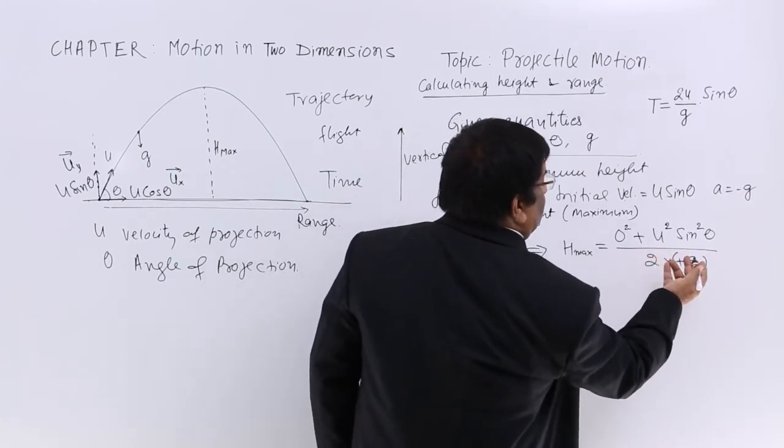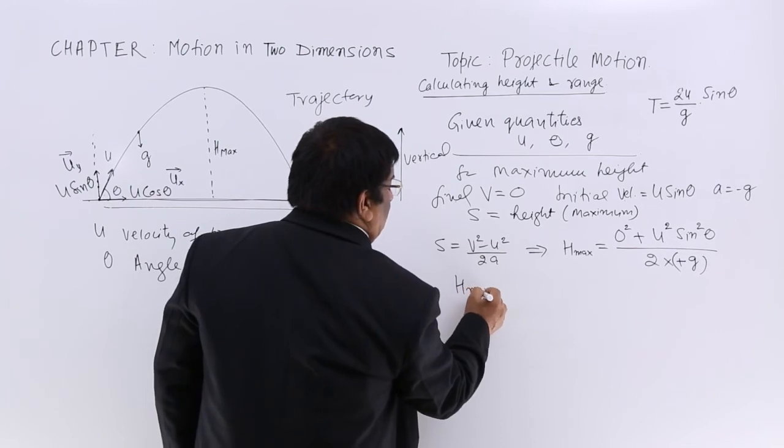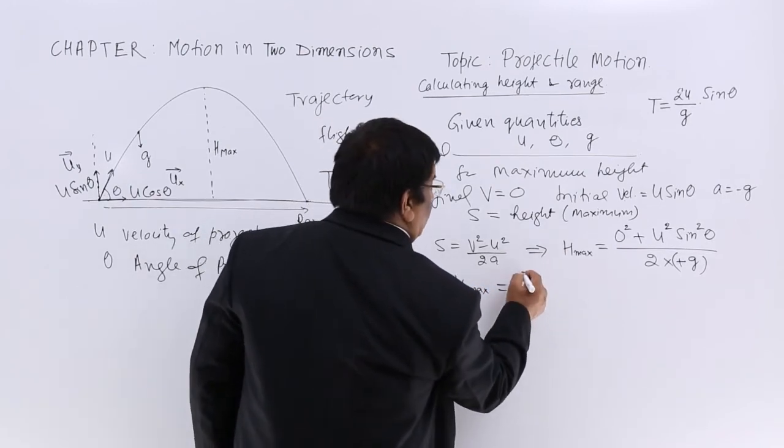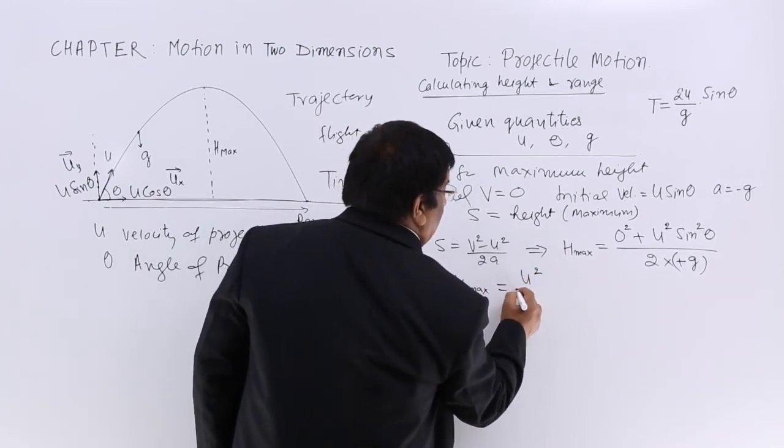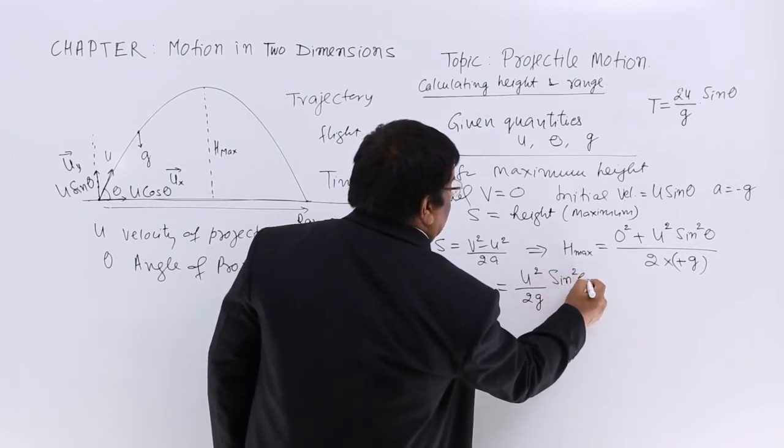So we have the answer: maximum height equals u² sin² θ upon 2g.